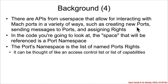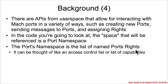The Mach interface system can be used for tasks to send messages to other tasks and to the kernel. There are user space APIs for creating new ports, sending messages, and assigning rights between ports. In the code you'll look at, you may see references to something called a space, which is a port namespace — basically a list of port rights. You can think of it like an access control list or a list of capabilities.